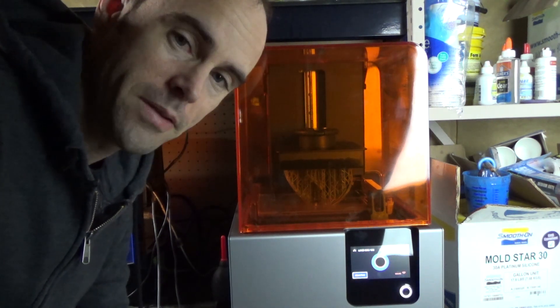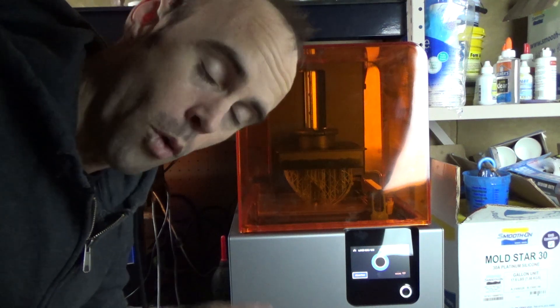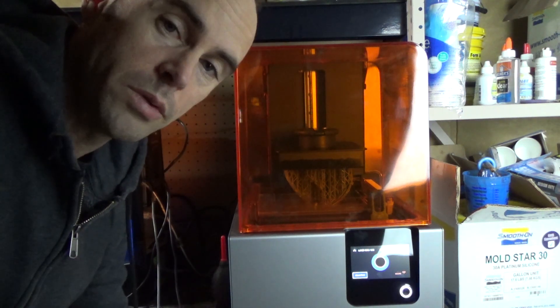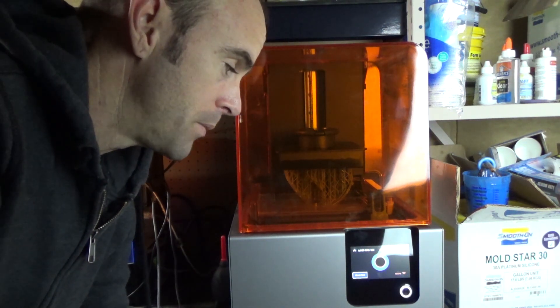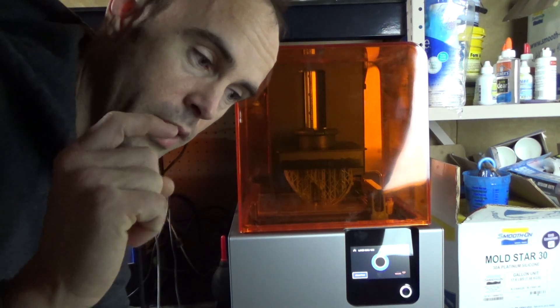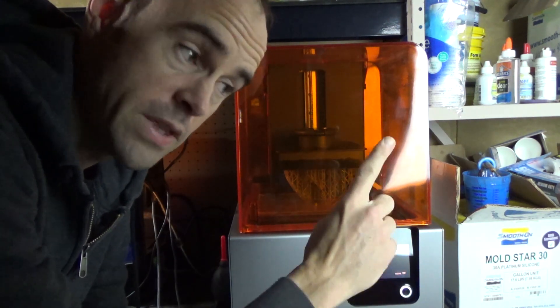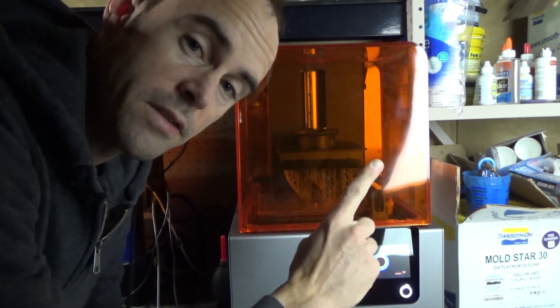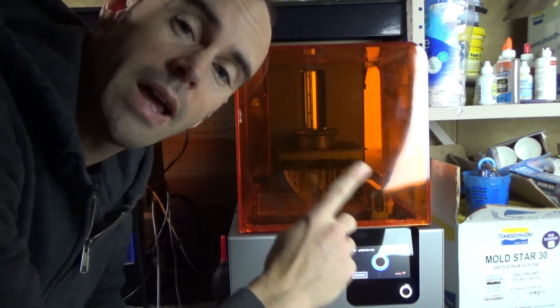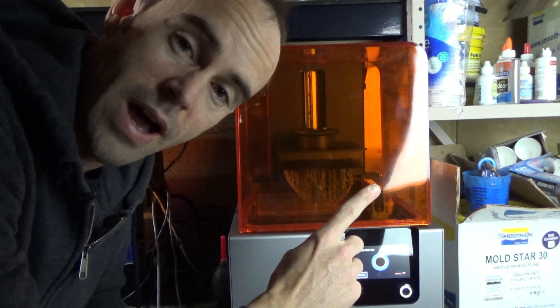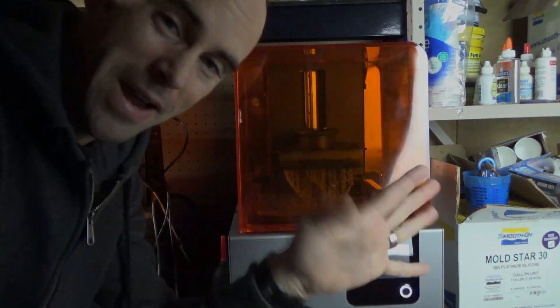So if you guys are having a similar issue with your Form 2 printer, please post below and let me know. If I get an answer I will put an annotation at the end of the video right here. If this video that I'm pointing at right here is not an answer to this problem, I have not figured it out. Thanks for stopping by, I will see you guys real soon. Bye.